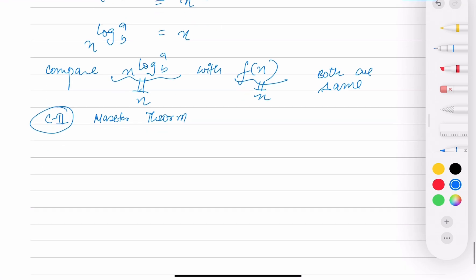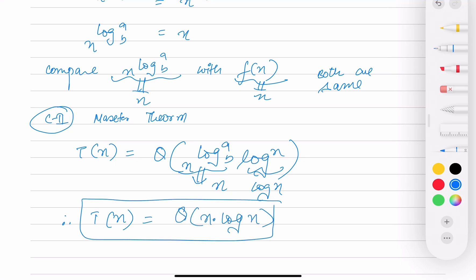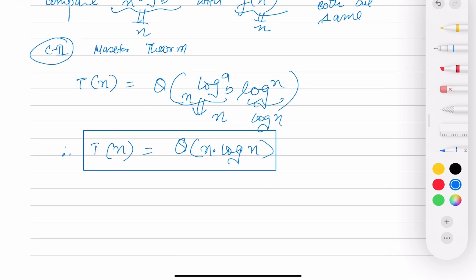Both are same, which is case 2 of the Master Theorem. If you remember case 2 which says that T(n) equals theta of n^(log_a) log n. So this is nothing but n and this remains log n. Therefore T(n) equals theta of n log n.